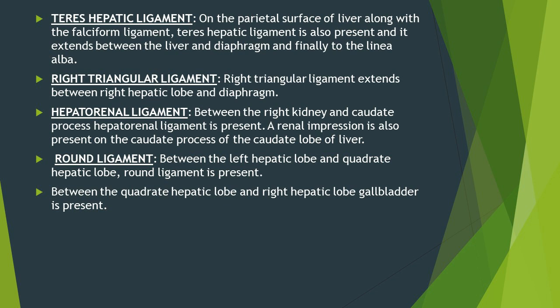Between the right hepatic lobe and diaphragm there is a ligament called the right triangular ligament, and similarly between the left hepatic lobe and diaphragm there is the left triangular ligament. Between the right kidney and quadrate process of the caudate lobe there is a ligament called the hepatorenal ligament.